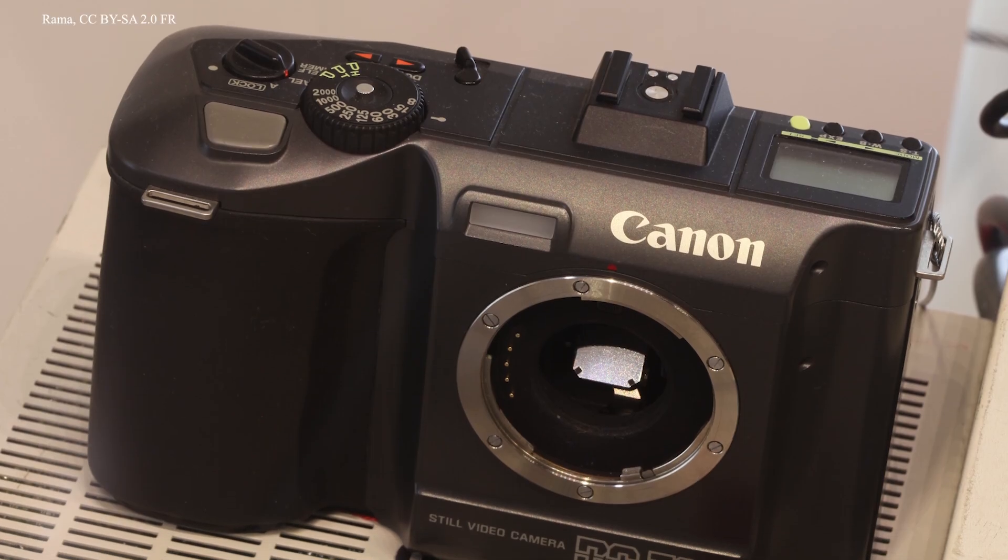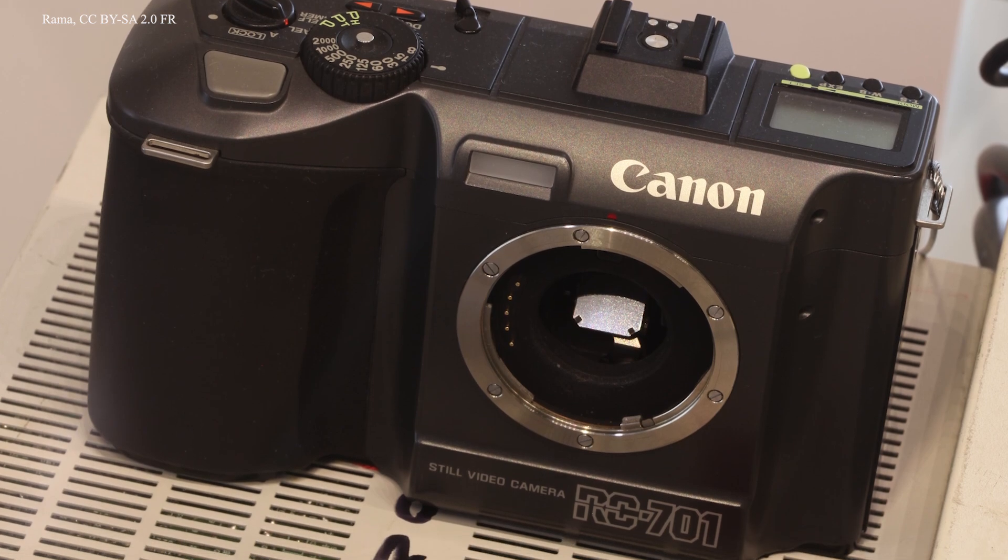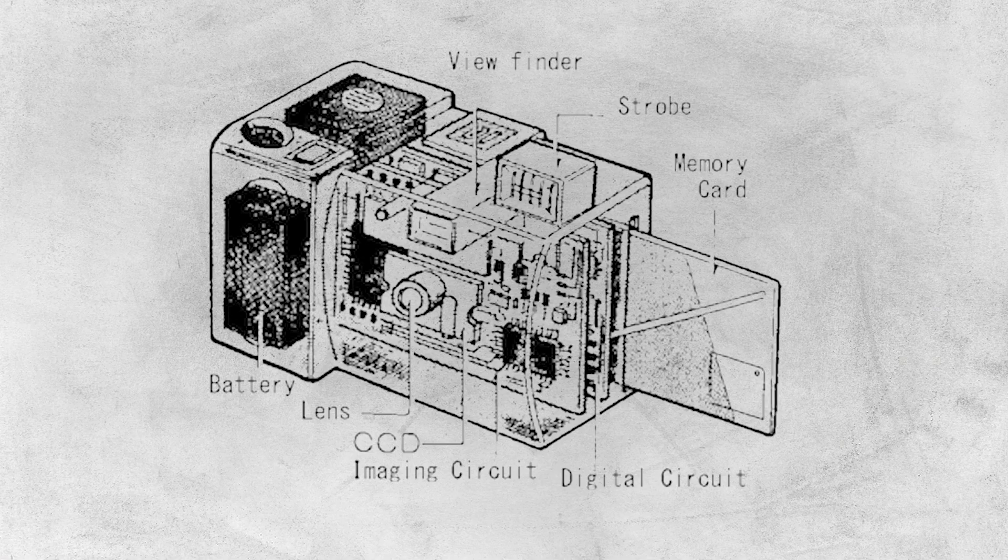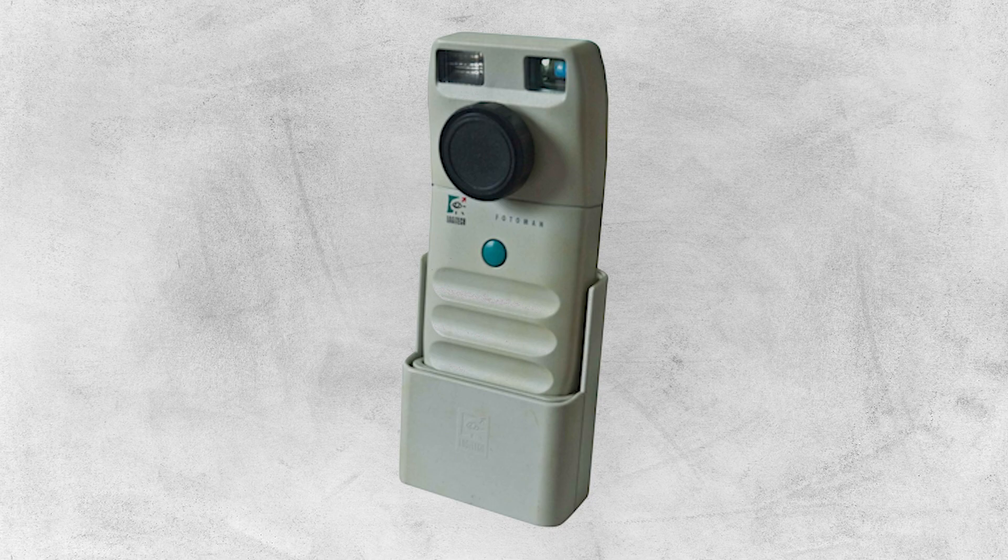This was followed by the Canon RC701 in 1984, the Fuji DS1P in 1988, and the Logitech Photoman in 1991. However, these early cameras had resolutions far inferior to ordinary film, had limited storage memory, and were heavy, bulky, and expensive, limiting their market to journalists and military clients.